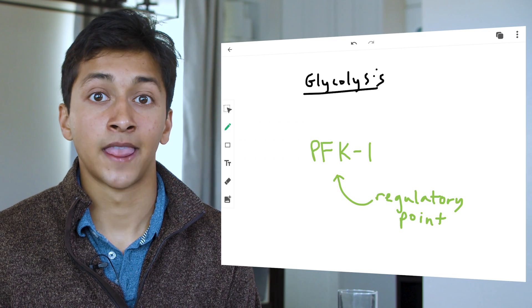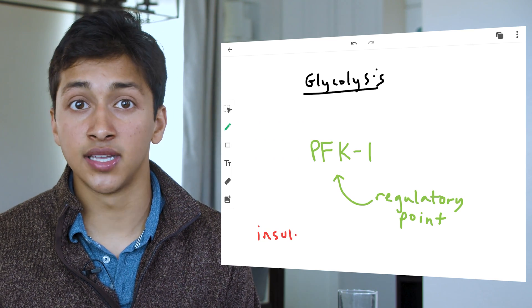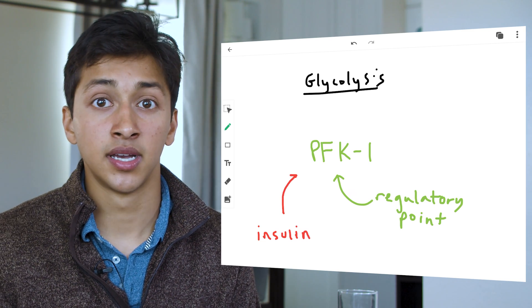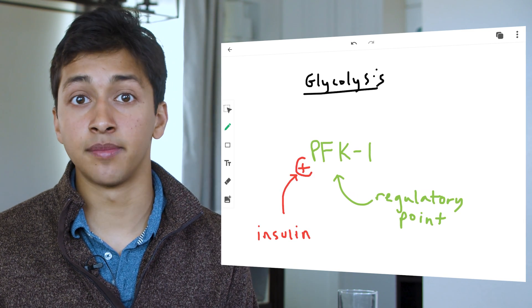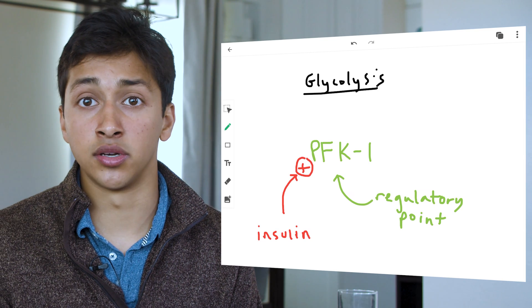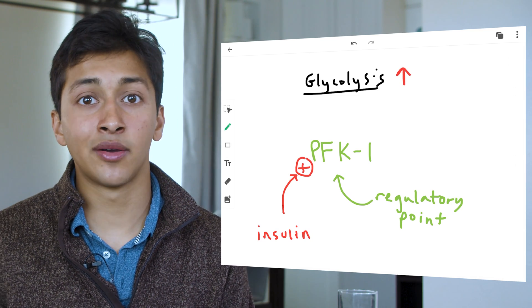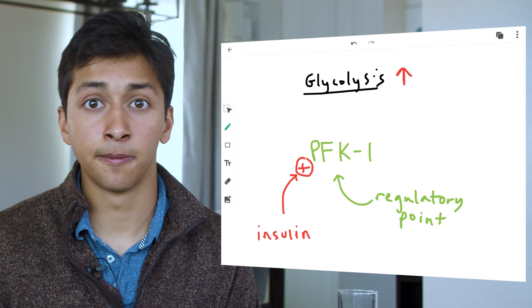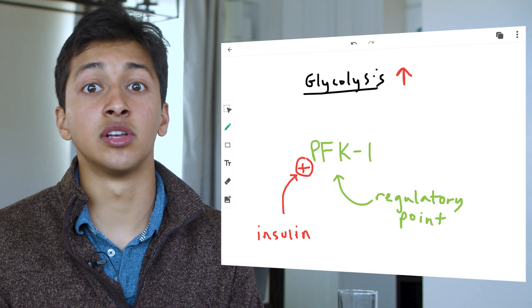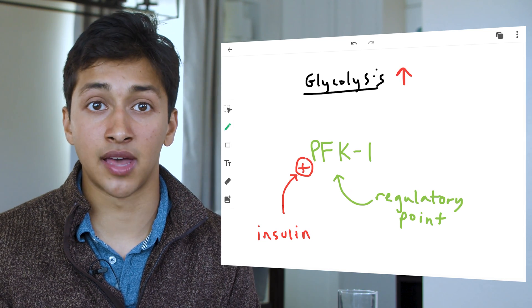After we eat the large meal, insulin is also released in our bloodstream. Insulin, through a series of steps, up-regulates PFK1 so that it works more quickly, allowing glycolysis to also occur more quickly. This is an example of the level at which you should understand a given metabolic pathway.